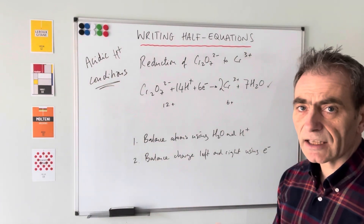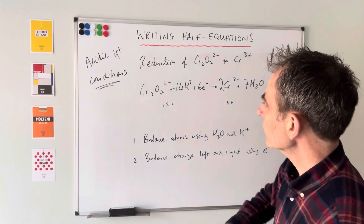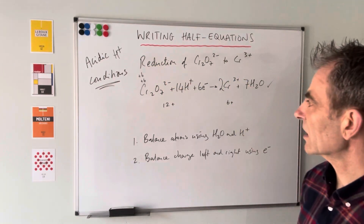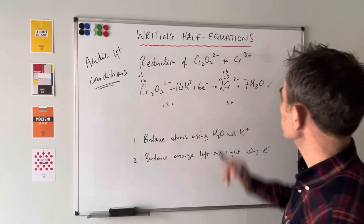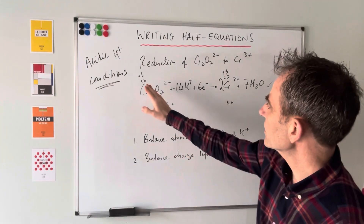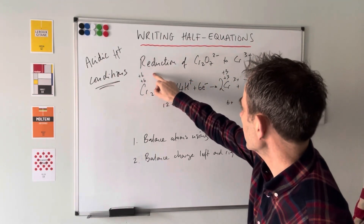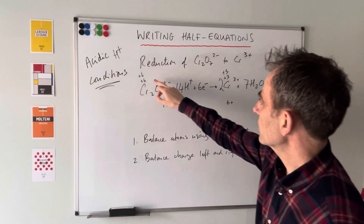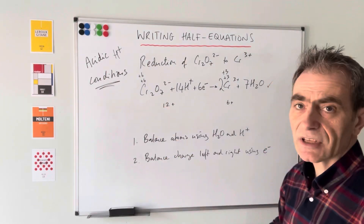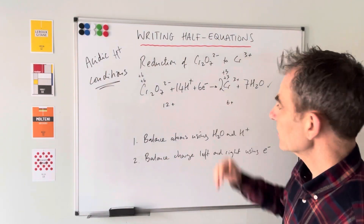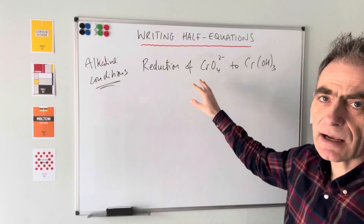Just like before, let's tie in the oxidation number change. Each chromium in Cr2O7 2 minus is at plus six - there are two chromiums so two separate plus sixes. Each chromium in Cr3 plus is at plus three. The total change in oxidation number is six: each one has changed by three, and because there are two chromiums you need double that. That's why we had six electrons.